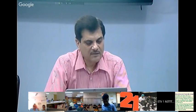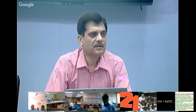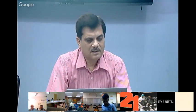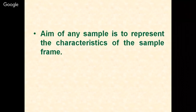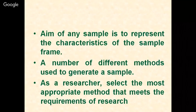The probability sampling methods include: simple random sampling, systematic random sampling, stratified random sampling, area or cluster random sampling, quota random sampling, and multi-stage random sampling. The aim of any sample is to represent the characteristics of the sampling frame. A number of different methods are used to generate a sample, and as a researcher you need to select the most appropriate method that meets the requirements of your objectives, keeping in view the nature of your research problem.